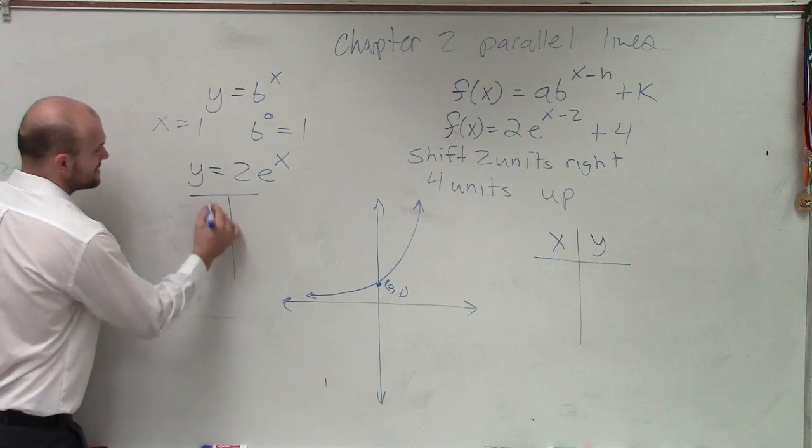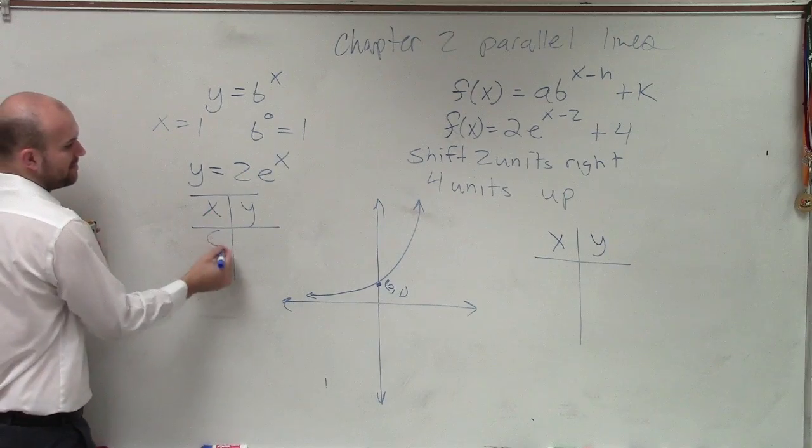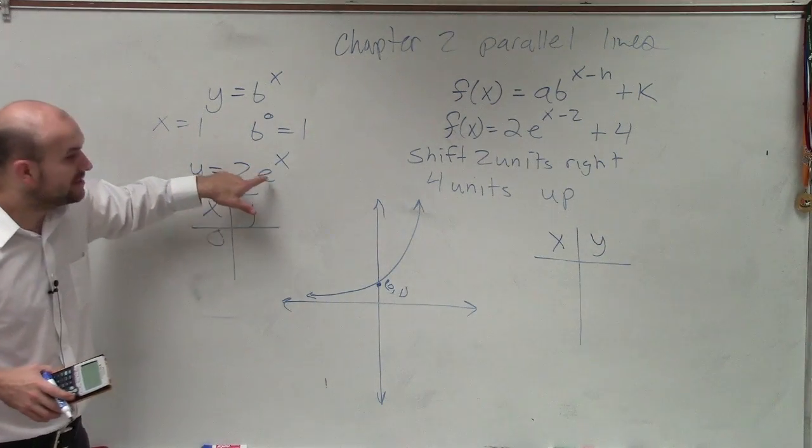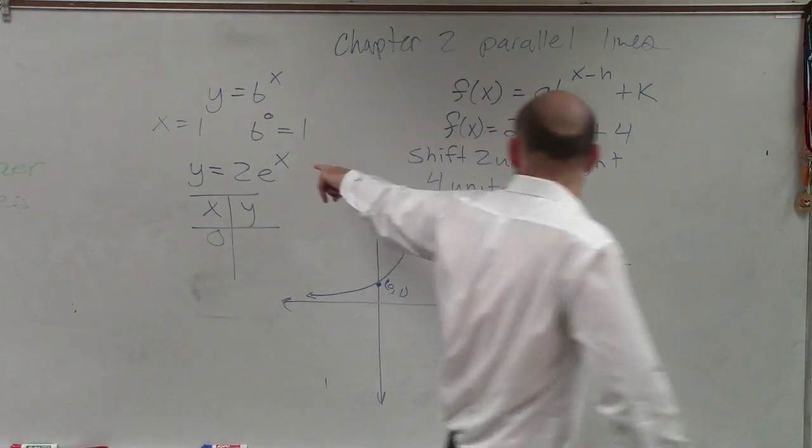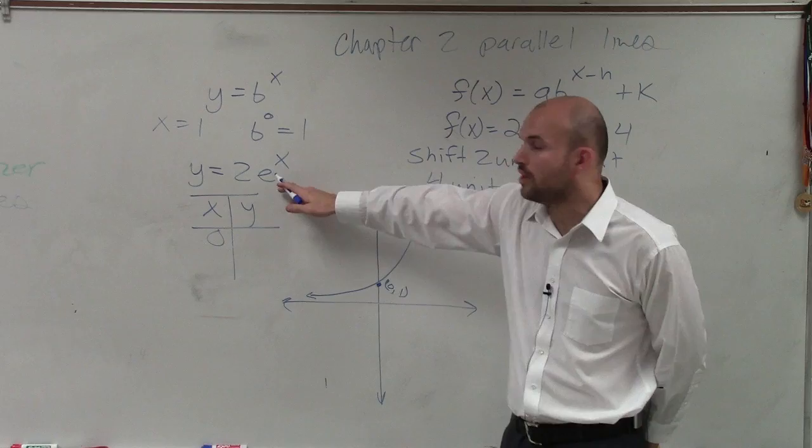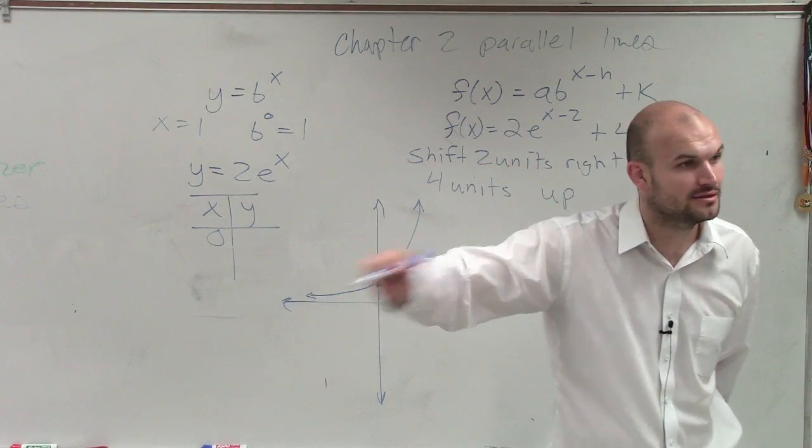And if you do that, you can create an xy table. And here, like I said, our easiest value would be pick 0. e to the 0 is 1. And then you could actually see that this graph, if you have e to the 0 is 1, 1 times 2 is actually going to be at 2.